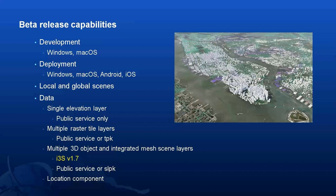We'll also support multiple raster tile layers, which include cached map or image data for display from a service or a local tile package (TPK). Sources include ArcGIS Online basemaps with imagery, topography, or street data. We'll support multiple 3D object or integrated mesh scene layers, founded on I3S — an open specification optimized for the delivery and use of 3D data. 3D objects can include textured buildings and structures, while integrated mesh uses a triangular network to represent a continuous 3D surface. They can be delivered as scene services or local scene layer packages (SLPKs). Scene layers must be published with version 1.7 of I3S, the latest version, to use the Maps SDKs, as it includes significant improvements to performance and memory usage.